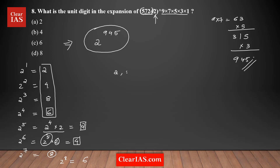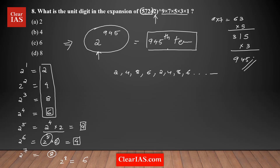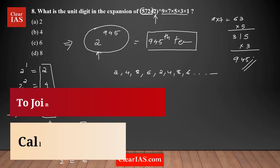I can clearly say there is a repeating pattern: 2, 4, 8, 6, and then it starts again: 2, 4, 8, 6, and so on. I need to find what would be the unit digit of 2 to the power 945, which is the 945th term in this series. The pattern length is 4, so what you need to do is divide 945 by 4 — because the pattern repeats every 4 terms — and find the remainder.